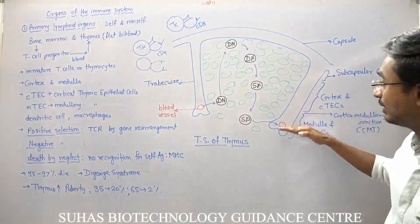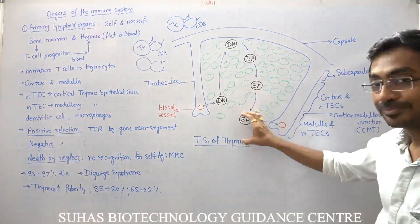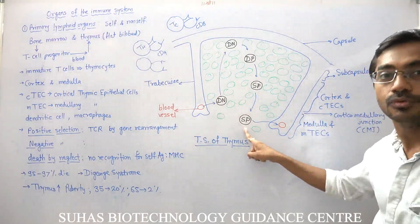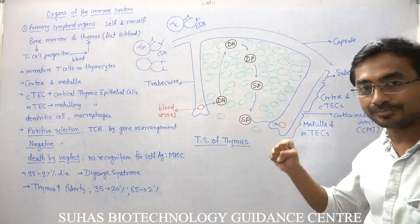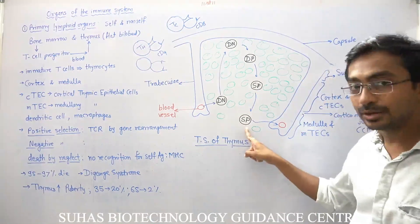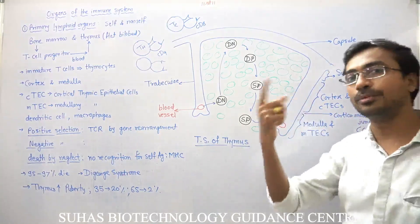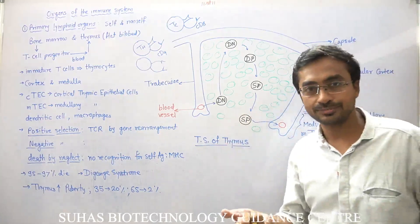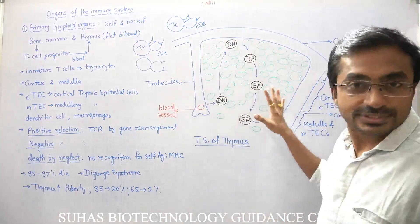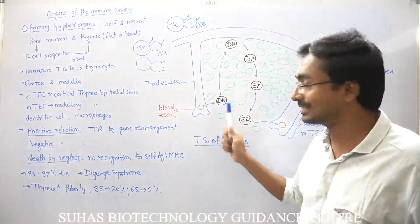This single positive cell will further interact with cortical as well as medullary epithelial cells, and then this fully mature single positive cell will again enter the blood circulation through blood vessels.